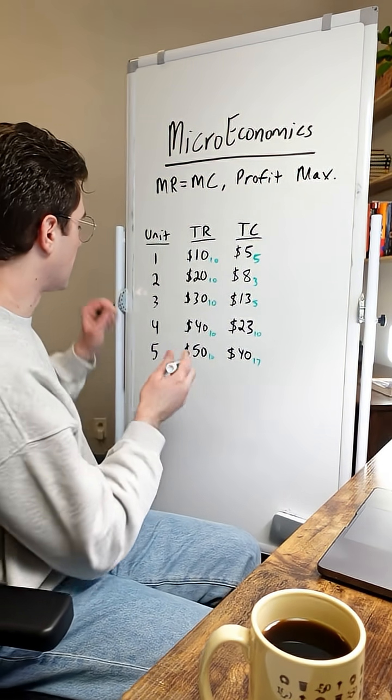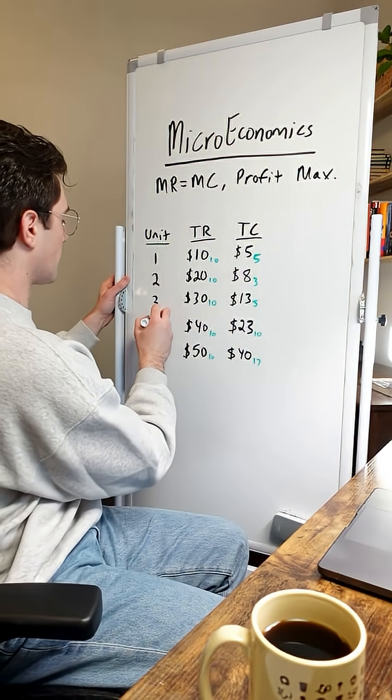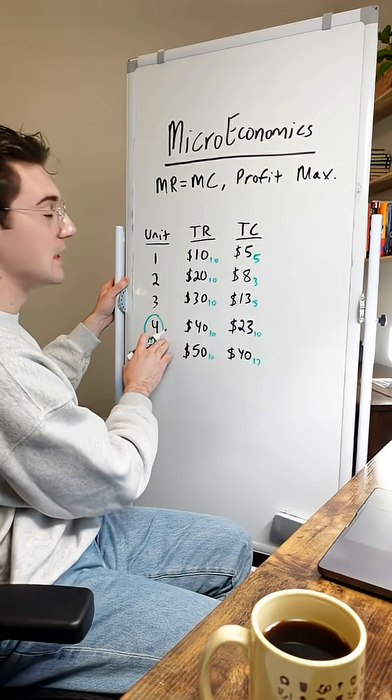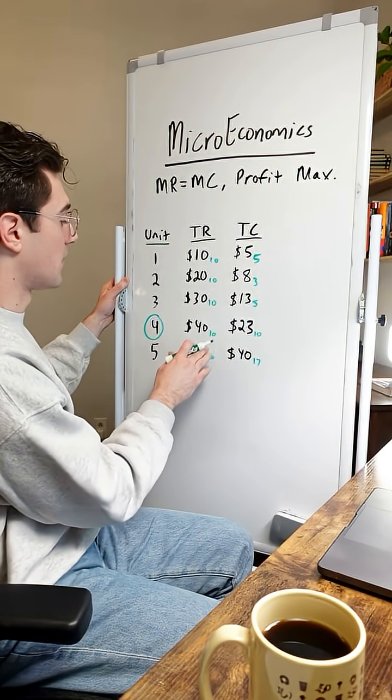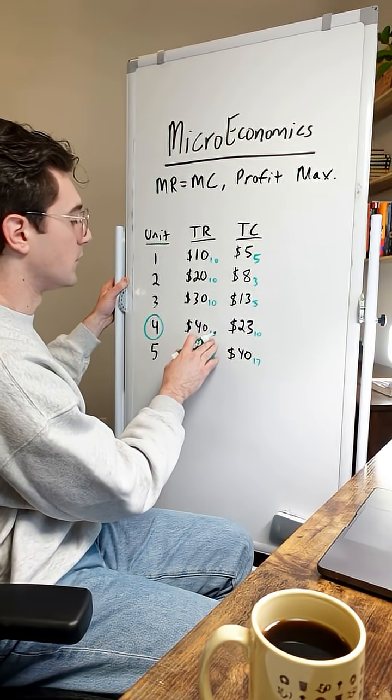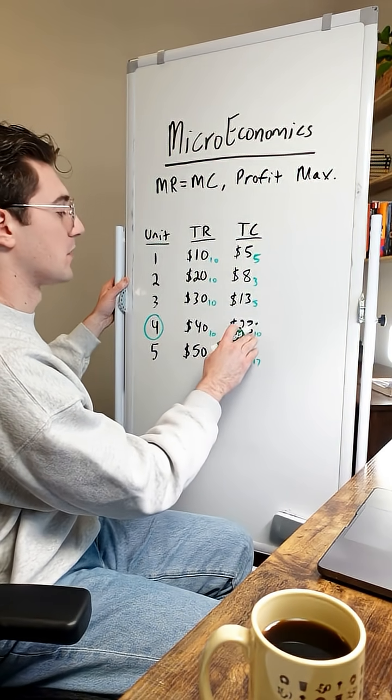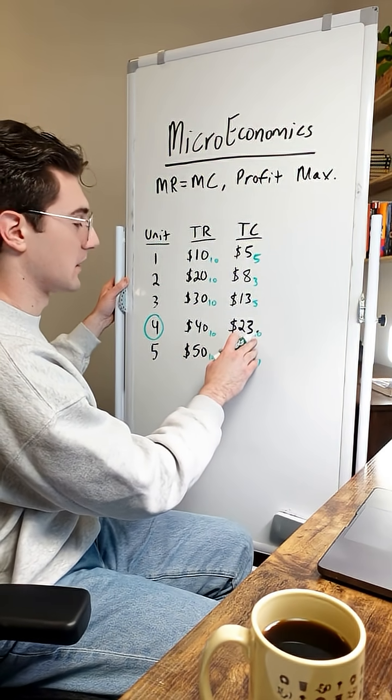Now before moving on, I'm going to circle four units here, because at four units our marginal revenue of $10 equals our marginal cost of $10.